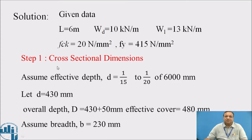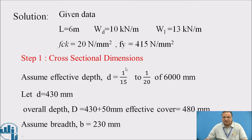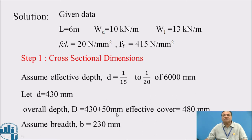Step 1: Cross-sectional dimensions. Assume the effective depth d, which is usually taken as 1/15 to 1/20 of the span. Span is 6000 mm here, so d works out to be 430 mm. The overall depth D (capital D) is equal to 430 mm plus 50 mm effective cover — where effective cover means clear cover plus half the diameter of the bar. So overall depth works out to be 480 mm, and assume a breadth of 230 mm.